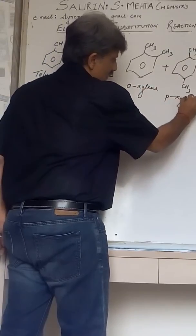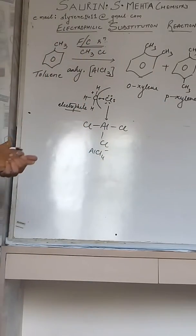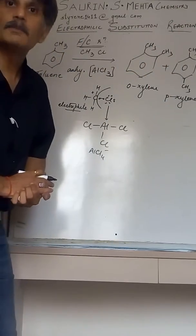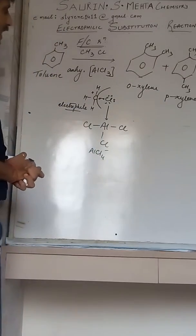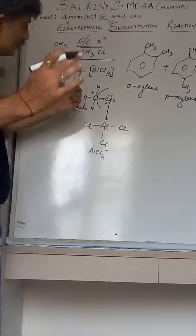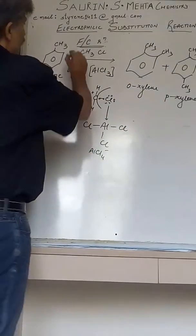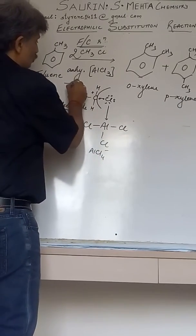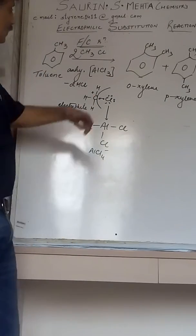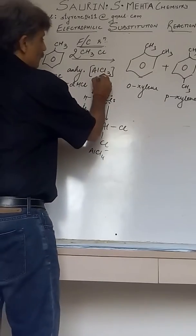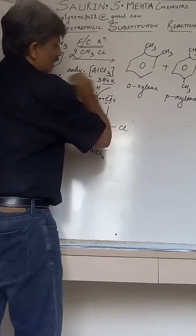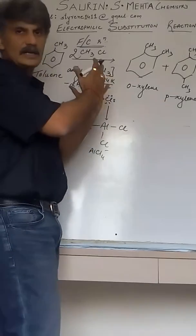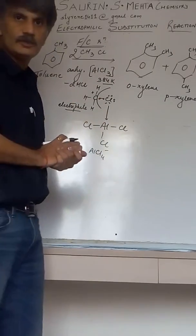Same thing happens on the para position and as a result you are getting o-xylene and p-xylene. O stands for ortho, P for para - it depends on the position of the functional groups. Now the H which has left the carbon has attained the plus sign, and that H+ combines with the Cl of CH3Cl. If we show this as 2 moles, we'll perform balancing by placing 2 over there, and as a result we get 2 moles of hydrochloric acid as a byproduct. The overall reaction occurs at 384 kelvin temperature, so 111 degree celsius.